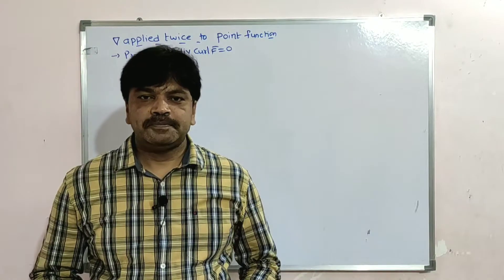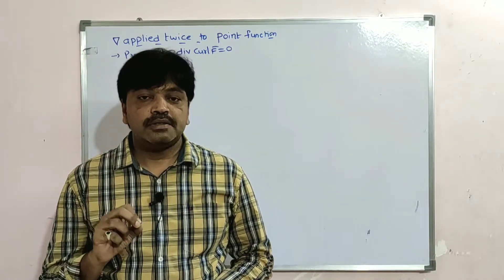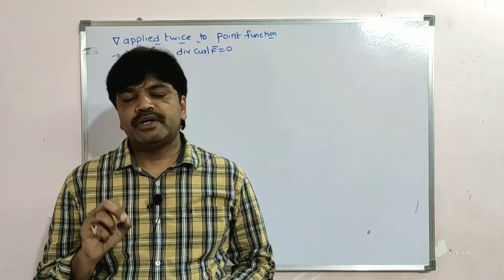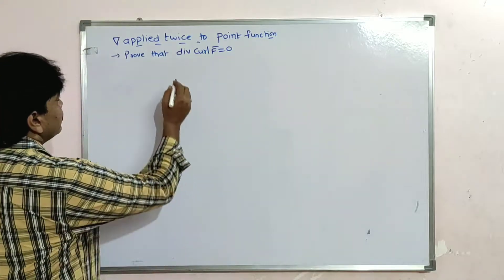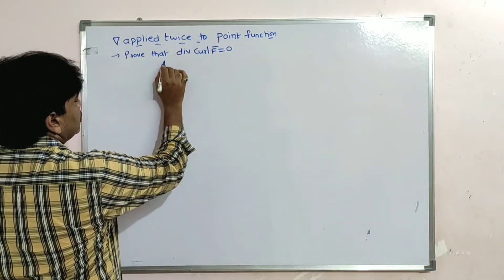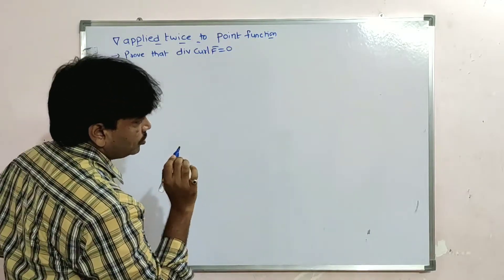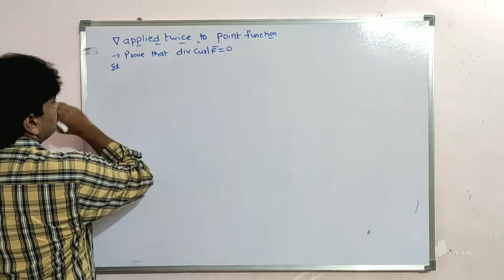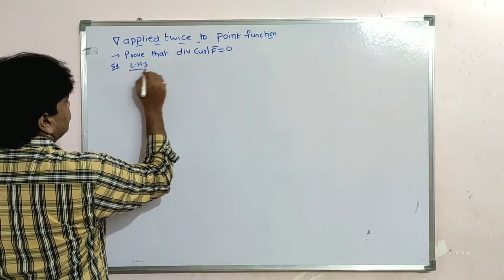Good morning friends. In this lecture I'm going to solve a property on del applied twice to a point function. The property is: del applied twice to a point function — prove that div(curl F̄) = 0. Solution: take LHS.